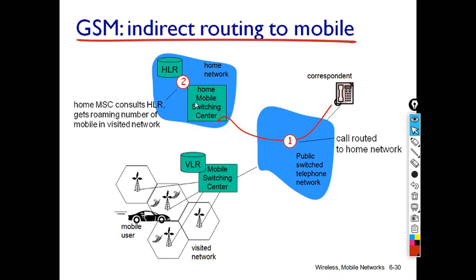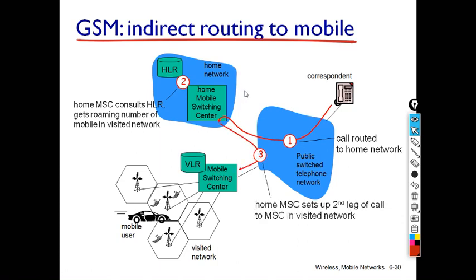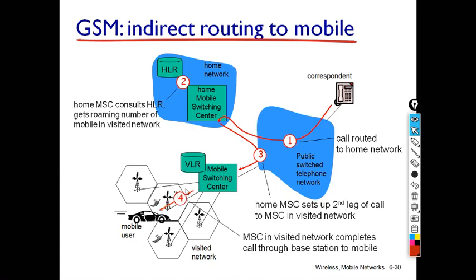From the HLR, the MSC obtains the care-of address of the user, because the user is currently in the foreign network. That foreign network address is registered in the HLR. The call is then routed to the foreign network, where another MSC handles the call, cross-verifies the information with the VLR, and obtains the care-of address of the mobile user. It then routes the call to the particular BTS and from there to the mobile user.